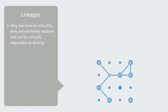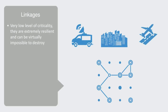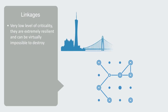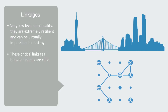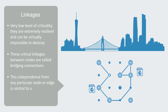This is in strong contrast to many of our centralized industrial systems, such as broadcast media, cities and airports, that all exhibit a high level of criticality because the networks are dependent upon centralized nodes. But it's not just dependency upon a single set of major hubs that is important to robustness, but also dependency upon a limited number of linkages. These critical linkages between nodes are called bridging connections. Peer-to-peer networks also have a high level of resiliency owing to their low level of linkage criticality. Any linkage between two computers can be replaced by using a proxy server as an alternative pathway, meaning the network is not dependent upon any specific connection. This independence from any particular node or edge is central to achieving robustness.